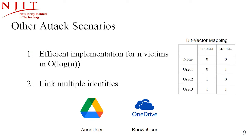Another attack scenario seeks to link multiple identities a single individual has across different sharing services. For example, an attacker can embed links to two resources shared with the victim in OneDrive and Google Drive — if both successfully load in the attack page, the attacker learns that both accounts belong to the same person.